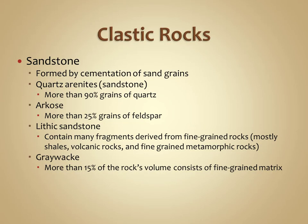Moving down in size to sand-sized particles, the collective name we give clastic rocks made up primarily of sand is sandstone. There are a number of different types of sandstones. In this class we'll look at four types: quartz arenite, also known as quartz sandstone; arkose; and lithic sandstone, or greywacke, which is mostly made up of a wide variety of sand-sized rock fragments.